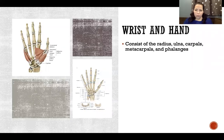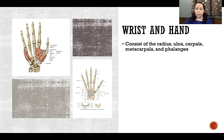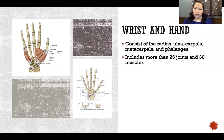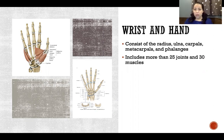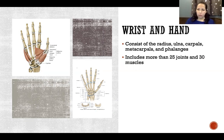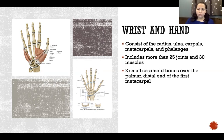The wrist and hand consists of the radius, ulna, carpals, metacarpals, and phalanges — so many different bones. All together the wrist and hand includes more than 25 different joints and 30 different muscles. We are not going to discuss all of these, but we are going to touch on some of the more important ones.